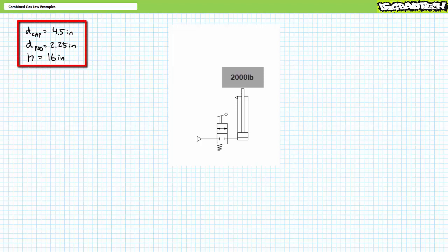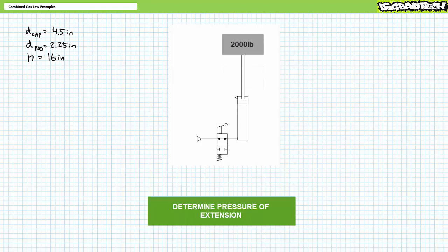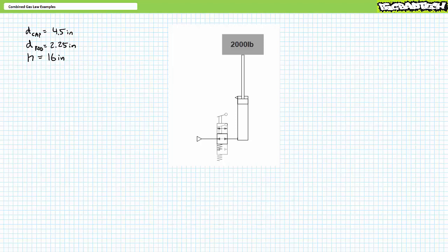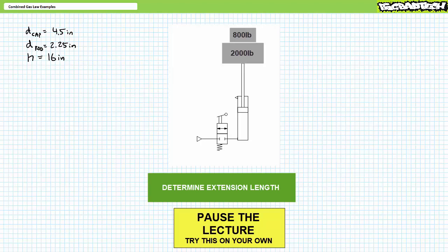Consider a pneumatic cylinder with a cap diameter of 4.5 inches, a rod diameter of 2.25 inches, and a travel length of 16 inches. Part one: determine the pressure necessary to fully lift a 2,000-pound weight in the orientation shown, which makes use of the full cap end area. Part two: at full extension, the valve is moved to the closed position and an additional 800 pounds is stacked on top. What does the cylinder do? Given air is compressible, we expect this additional weight to compress the cylinder and change its extension length. Solve for this length, assuming constant temperature.